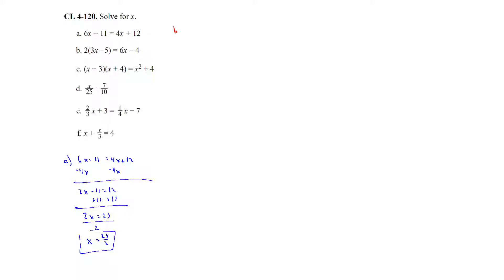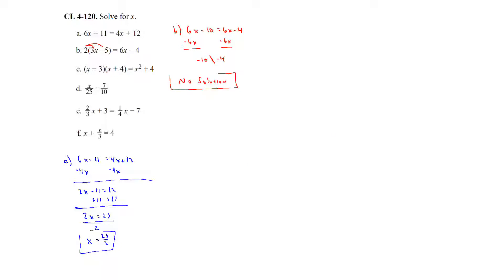For part b, 2 times the quantity 3x minus 5 equals 6x minus 4. Distributing gives 6x minus 10 equals 6x minus 4. Subtracting 6x from both sides, the variable terms cancel and we're left with a statement that is not true, so there is no solution — no x value satisfies this equation.